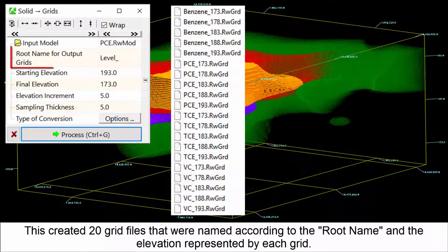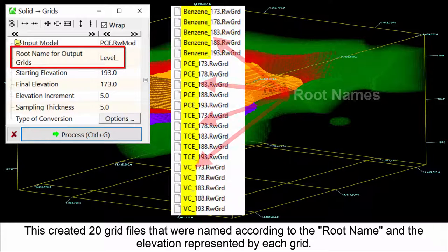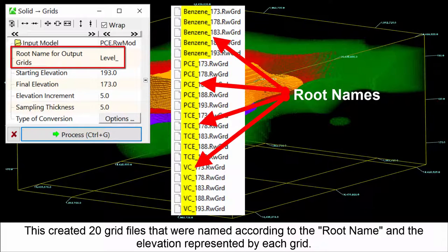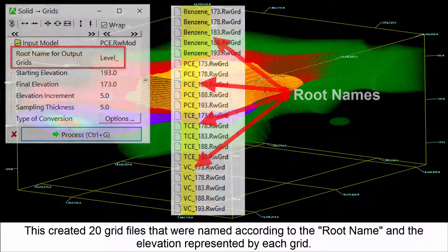This created 20 grid files that were named according to the root name and the elevation represented by each grid.